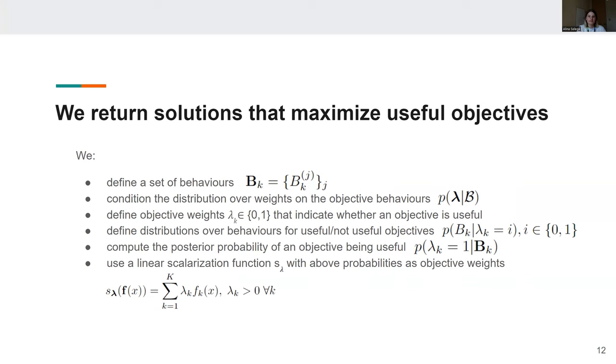We also define the objective weights lambda k for each of the k objectives to be binary, where value one indicates that that objective is useful and zero indicates otherwise.